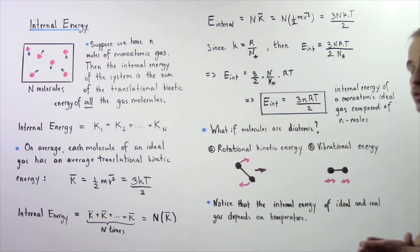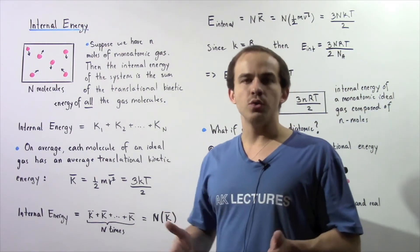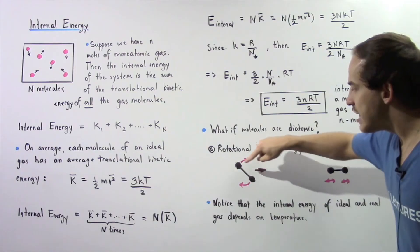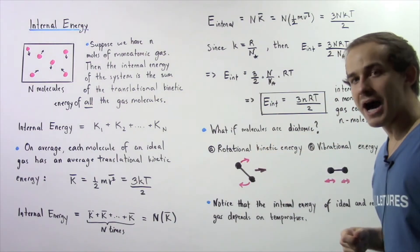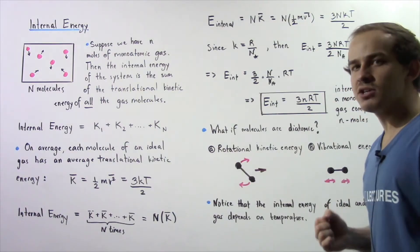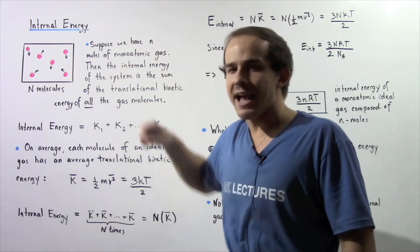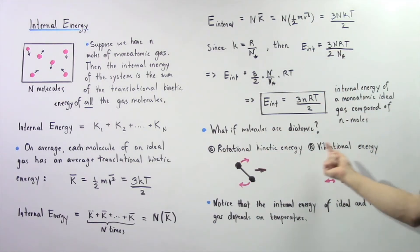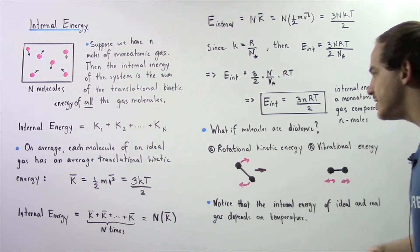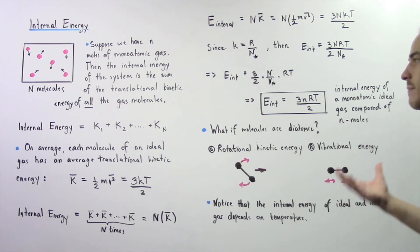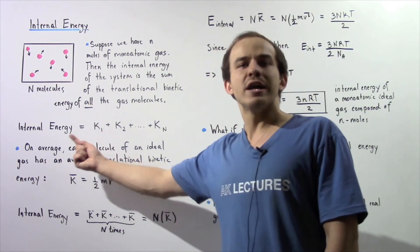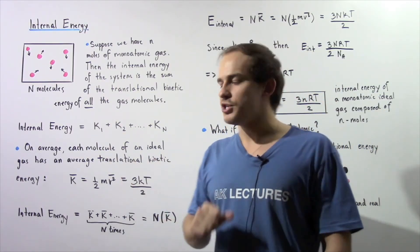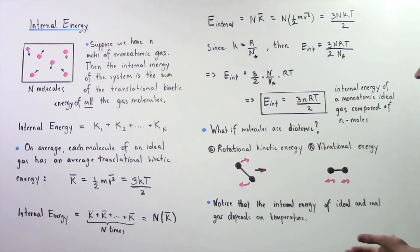But what about diatomic molecules? Diatomic molecules are molecules that are composed of two atoms. Suppose we have two atoms connected and bonded by a sigma bond. Not only will these molecules have translational kinetic energies, they will also have rotational kinetic energies as well as vibrational kinetic energies. So in a system composed of diatomic molecules, we not only have to sum up the translational kinetic energies, but we also have to sum up the rotational and vibrational types of energies.